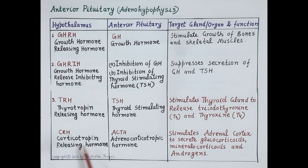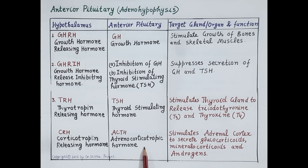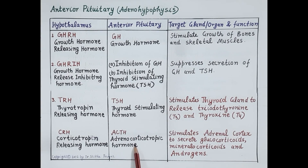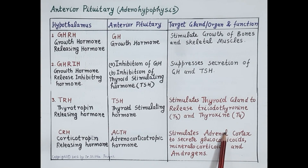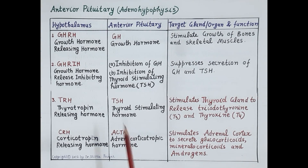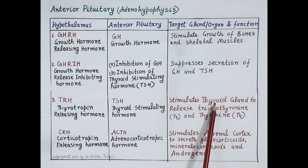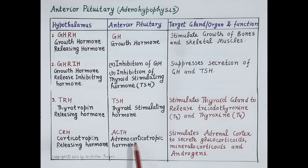The next hormone released by hypothalamus is CRH (corticotropin releasing hormone). CRH stimulates anterior pituitary to release ACTH (adrenocorticotropic hormone). ACTH is again a tropic hormone — it stimulates the adrenal cortex to secrete steroidal hormones, namely glucocorticoids, mineralocorticoids, and androgen. Here, anterior pituitary releases TSH commanding the thyroid gland, and also releases ACTH regulating the functioning of adrenal cortex.